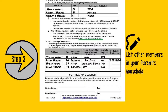For each individual listed in this table, make sure to list if they will be attending college any time between July 1, 2022 and June 30, 2023. If so, indicate if they will be enrolled at least half-time. If the individual is not going to be enrolled in a college, you can list N.A. for not applicable.